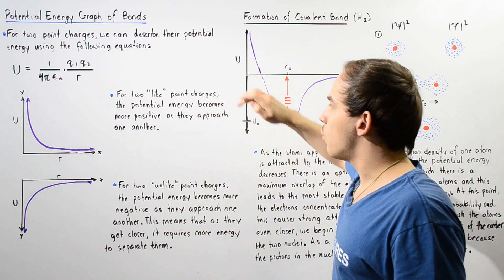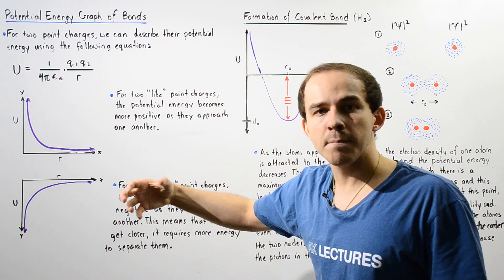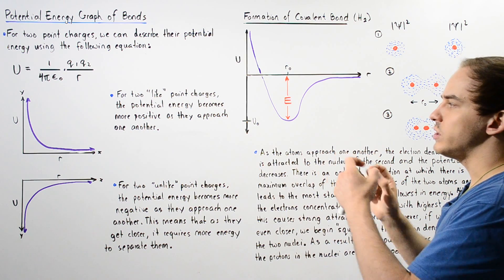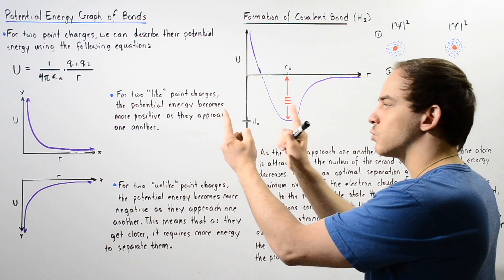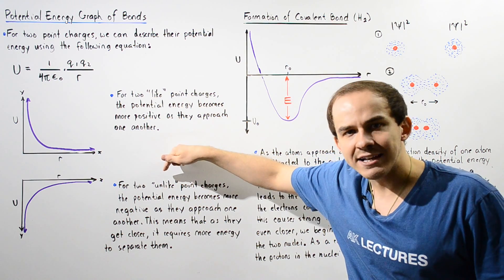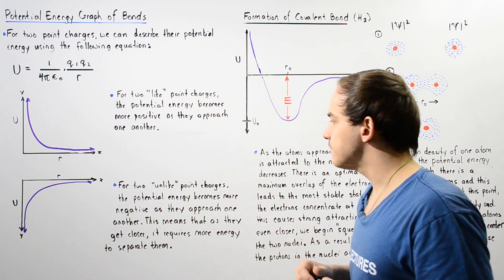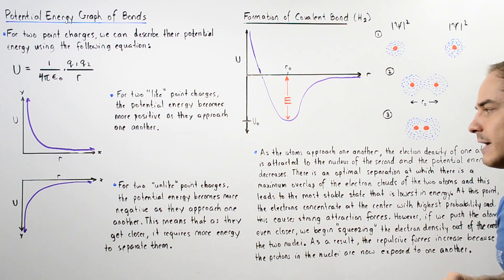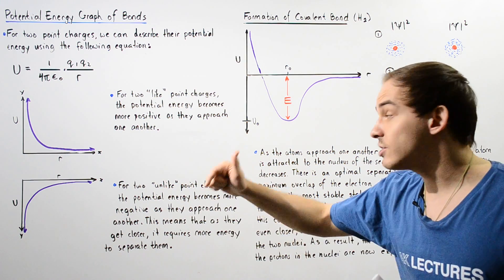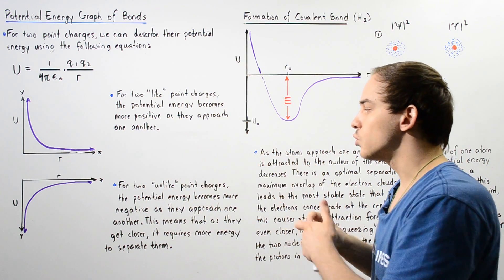For two like point charges, the potential energy becomes more positive — it increases as the separation distance between them decreases as they approach one another. On the other hand, if we have two unlike charges — for example, a positive charge and a negative charge — for two unlike point charges, the potential energy becomes more negative. It decreases as these two point charges approach one another.